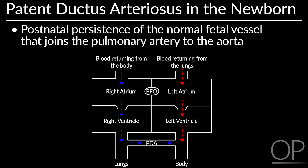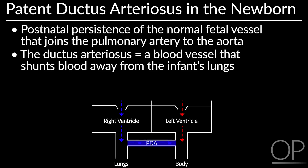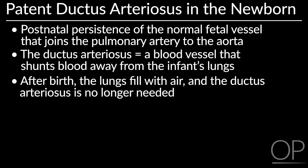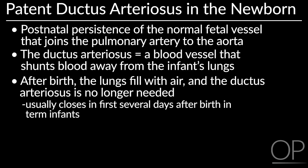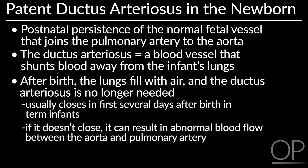Patent ductus arteriosus, or PDA, is the major cardiovascular risk for newborns. PDA is postnatal persistence of the normal fetal vessel that joins the pulmonary artery to the aorta. The ductus arteriosus is a fetal vessel that shunts blood away from the infant's lungs to the systemic circulation. After the infant is born and the lungs fill with air, it is no longer needed and usually closes in the first several days after birth. If it does not close, it results in abnormal blood flow between the aorta and pulmonary artery, two major blood vessels that carry blood from the heart.